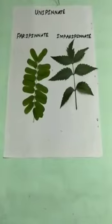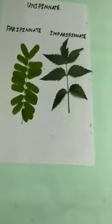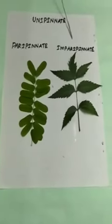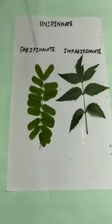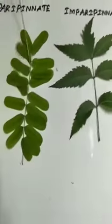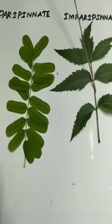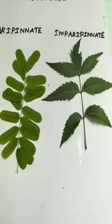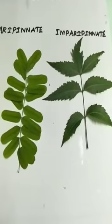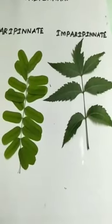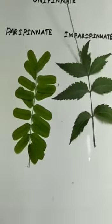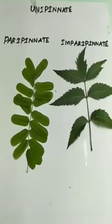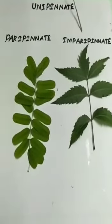The first type is unipinnately compound leaf. In a unipinnately compound leaf, only one rachis is present, known as the primary rachis. This primary rachis bears leaflets laterally. There is no secondary or tertiary rachis — only one rachis, the primary rachis, is present. That is known as a unipinnately compound leaf.